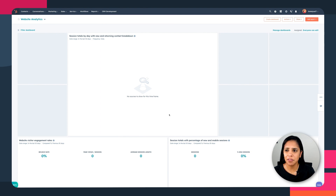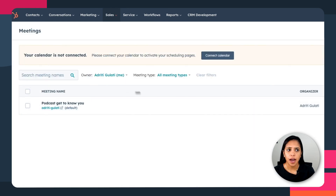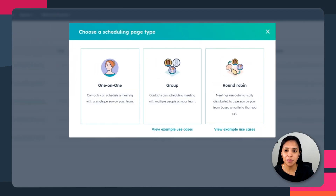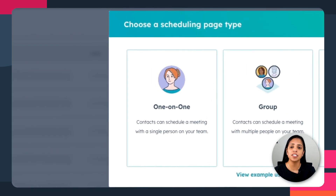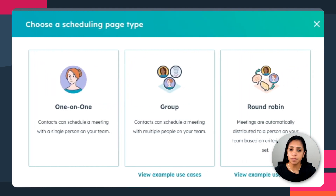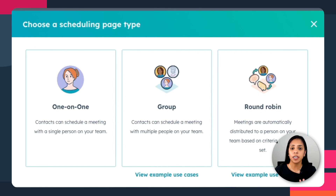One of my favorite things about the Meetings tool is the fact that you can have multiple Meetings links. I use my one-on-one meeting link all the time — for those consultations that I have with my customers. I use my group meeting link less, but I still use it — for when I need my manager on the call with me. The group meeting link will look at my calendar and my manager's calendar and make sure that our customer can only book a time that's suitable for both of us.